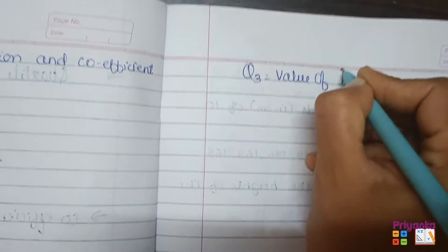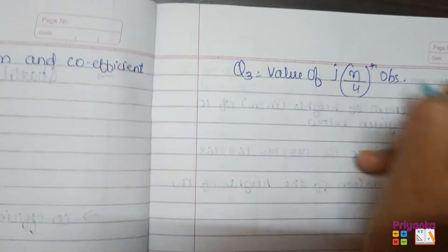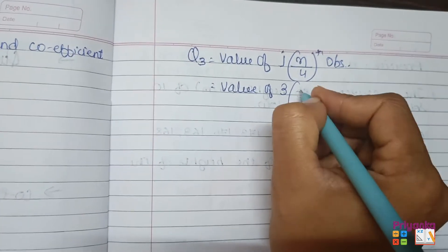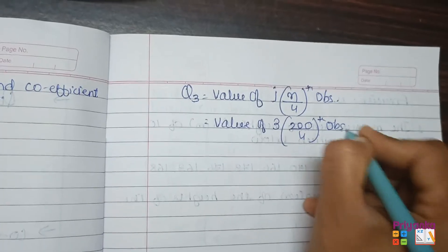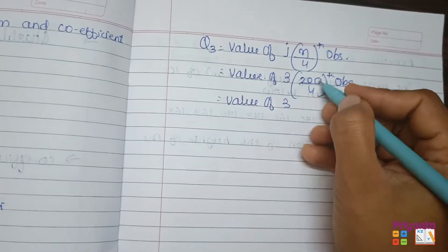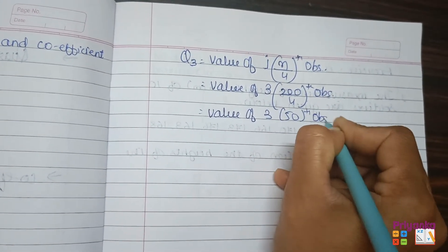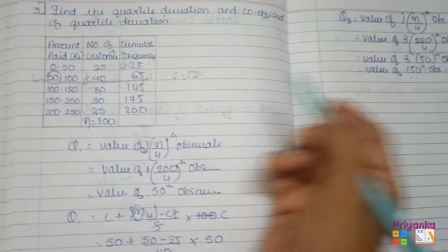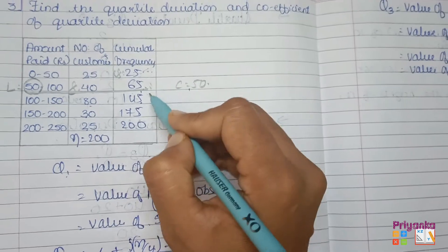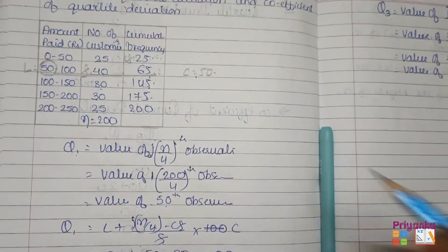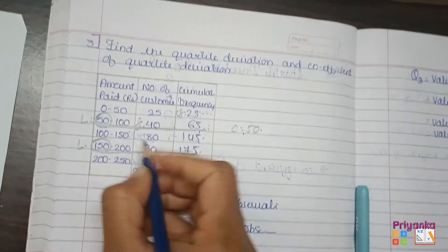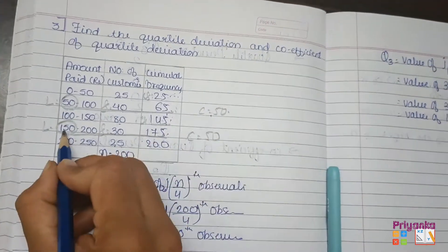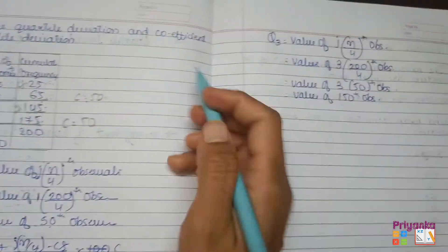For Q3: value of 3N/4 = 3 × 200/4 = 150th observation. In the cumulative frequency column: 25, 65, 145 — not enough; 175 covers the 150th. So Q3 class: lower limit L = 150, frequency = 30, cumulative frequency above = 145, class length C = 50.